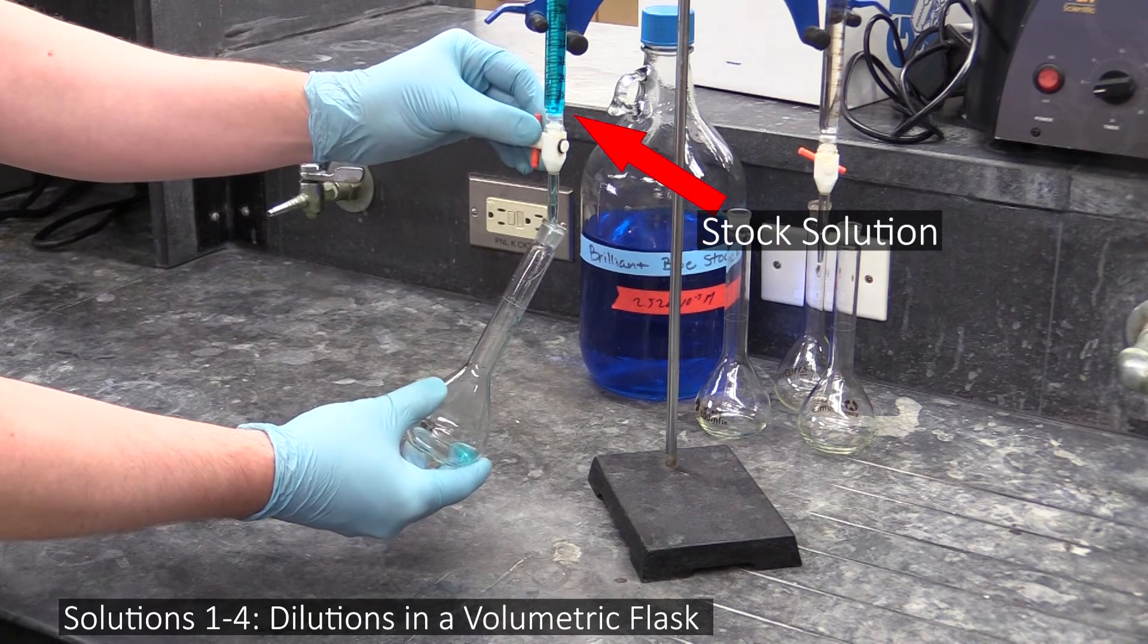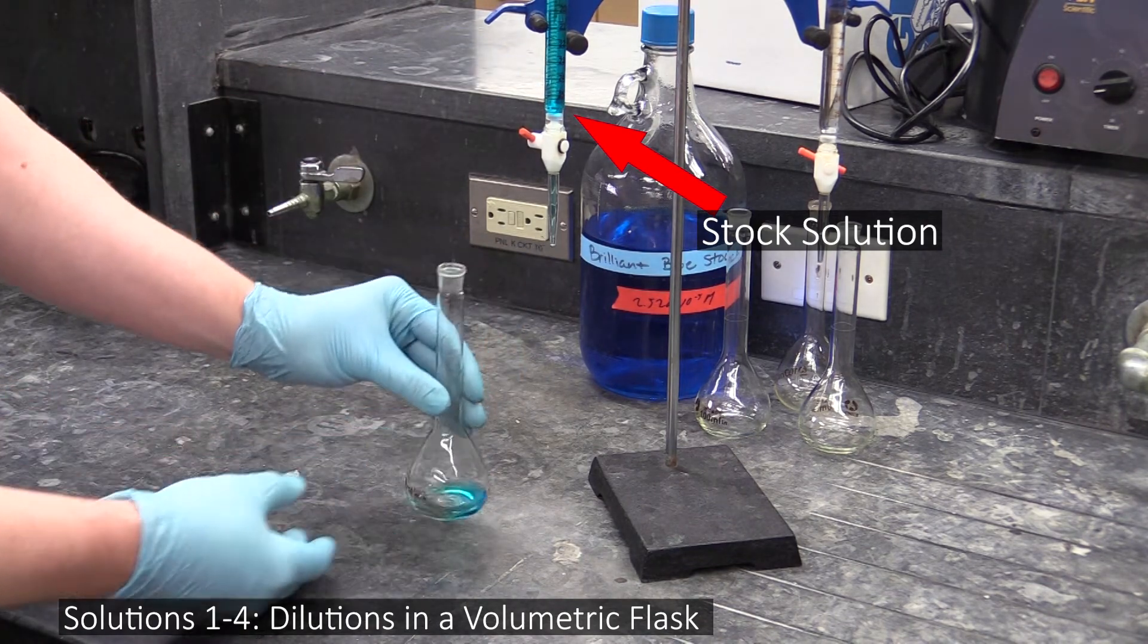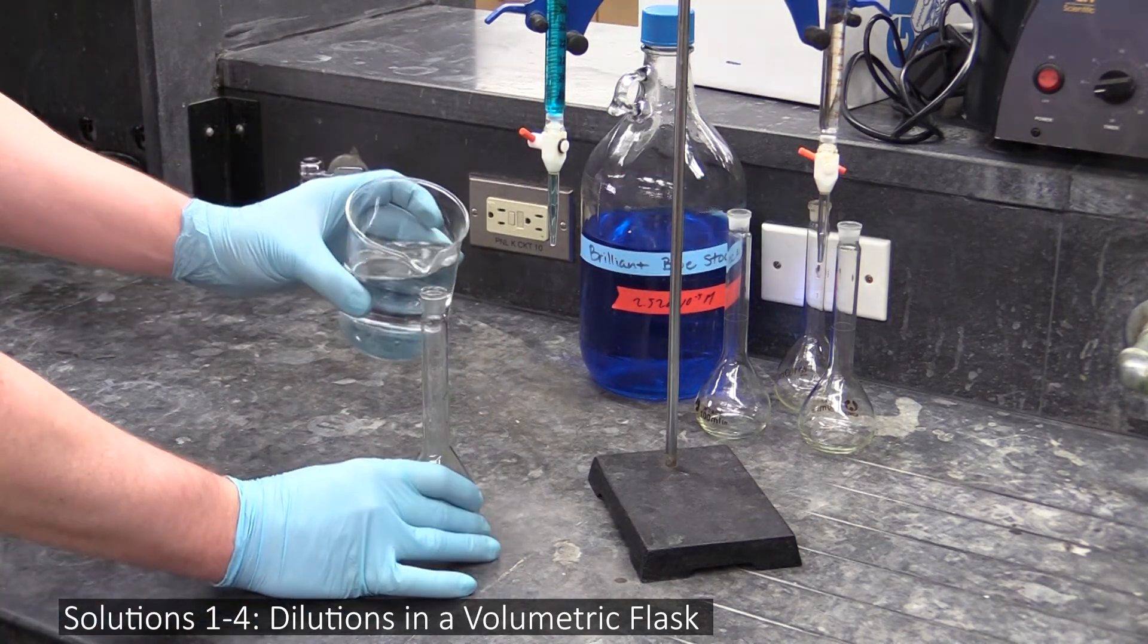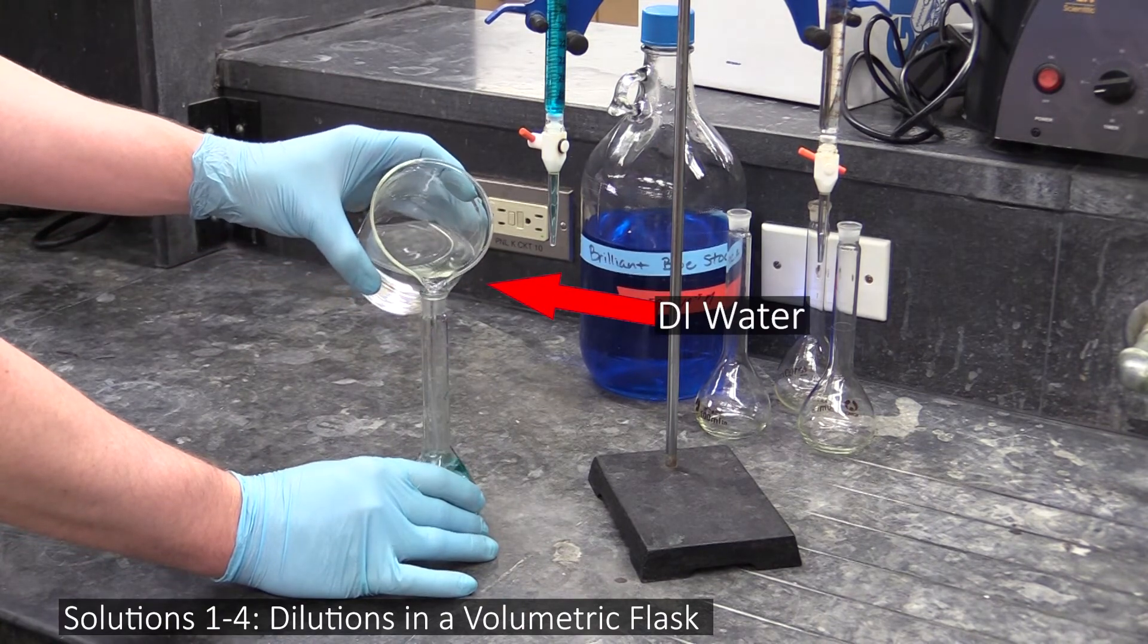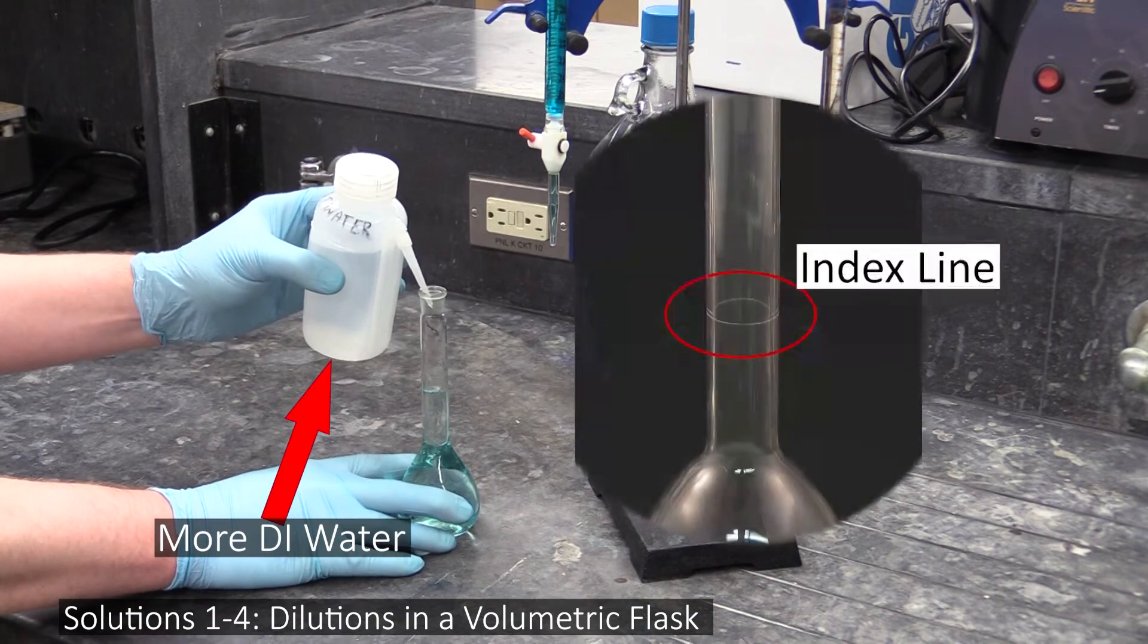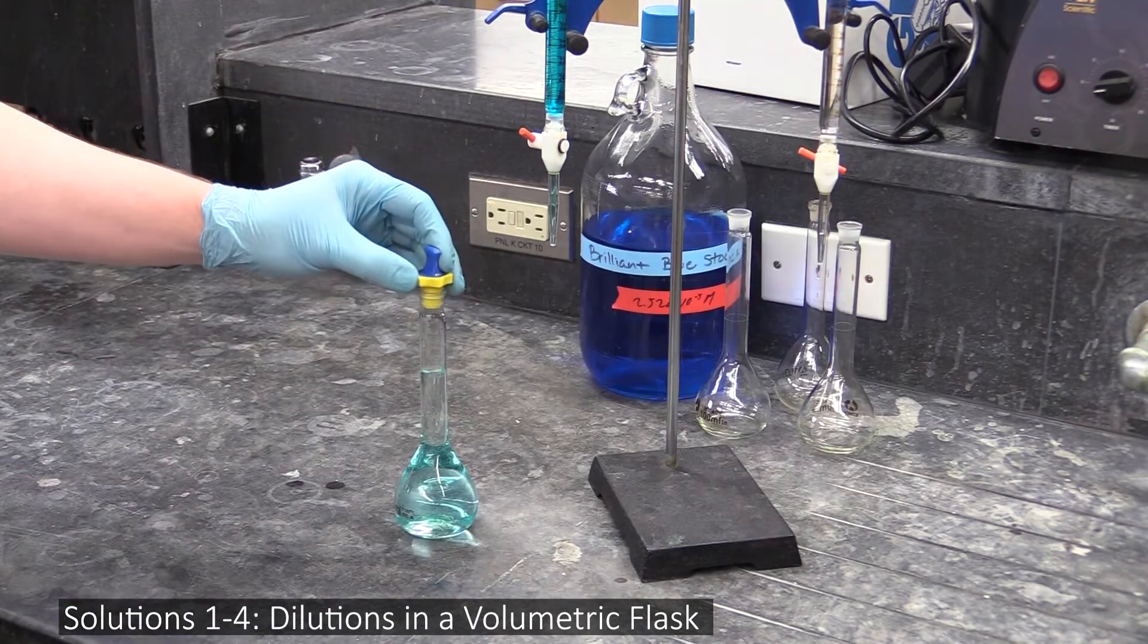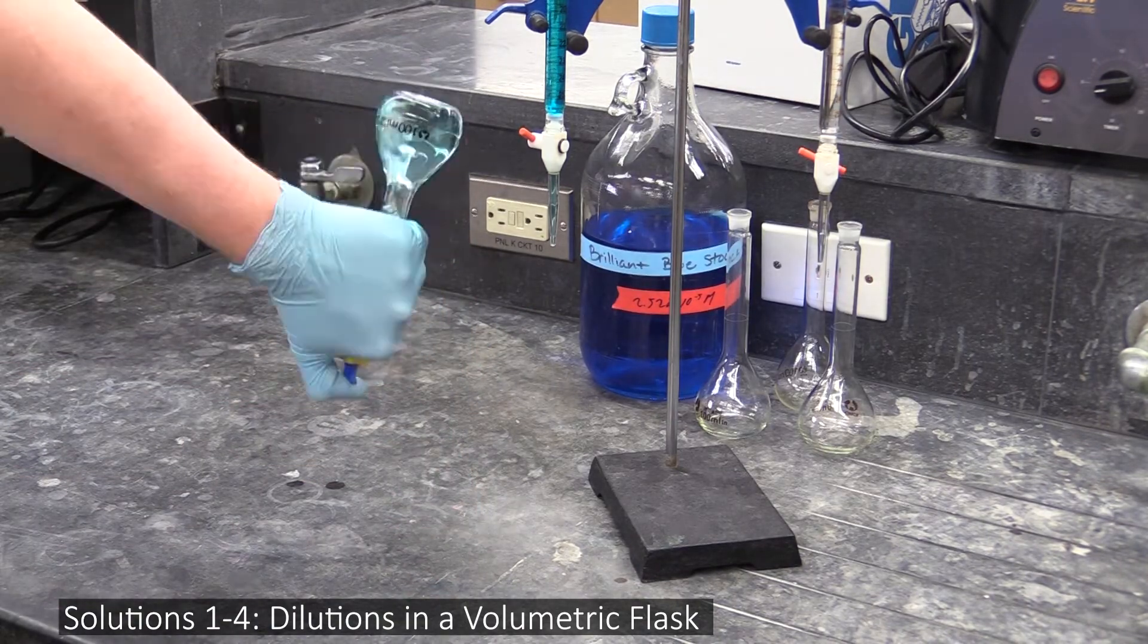Now, to make your first four solutions, you'll use a burette to add various quantities of stock to volumetric flasks, and then bring these solutions up to the flask's rated volume with DI water. Just be careful not to go past the flask's index line when filling them, and make sure to mix them thoroughly by inverting 20-30 times.